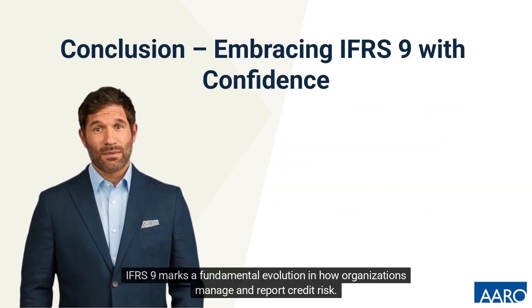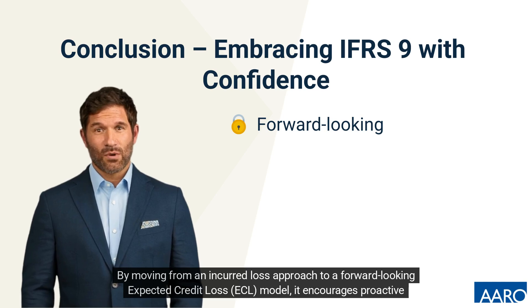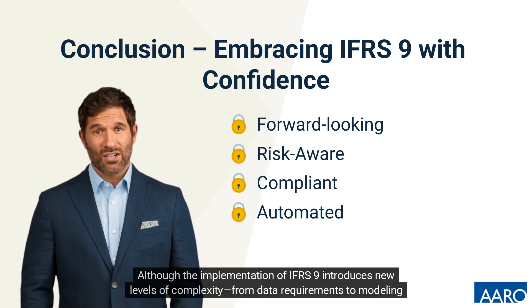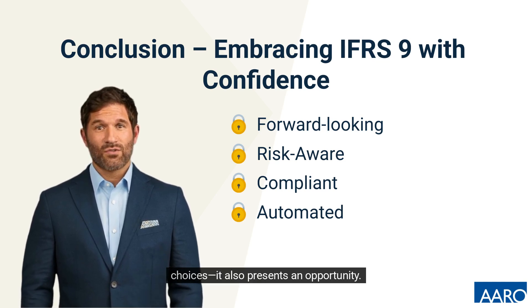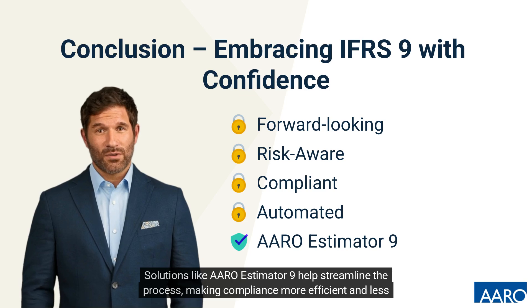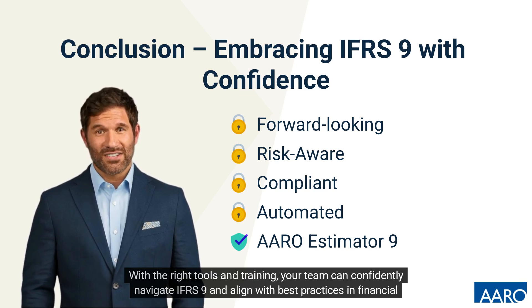IFRS 9 marks a fundamental evolution in how organisations manage and report credit risk. By moving from an incurred loss approach to a forward-looking expected credit loss model, it encourages proactive risk management and timely recognition of financial impacts. Although the implementation of IFRS 9 introduces new levels of complexity — from data requirements to modelling choices — it also presents an opportunity. Solutions like ARO Estimator 9 help streamline the process, making compliance more efficient and less resource intensive. With the right tools and training, your team can confidently navigate IFRS 9 and align with best practices in financial reporting.